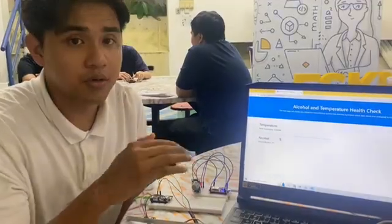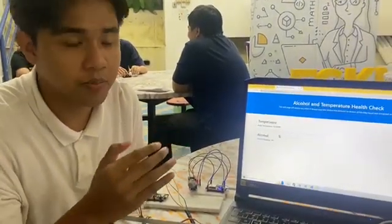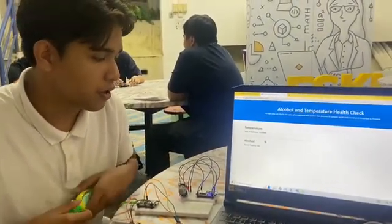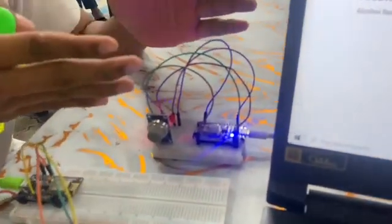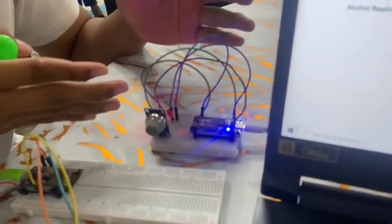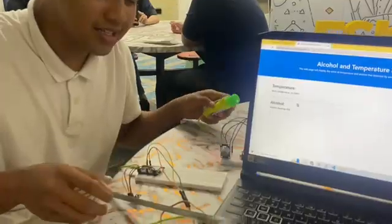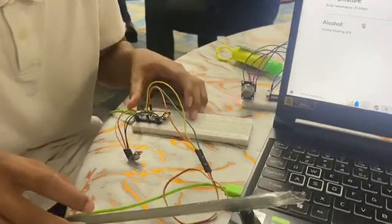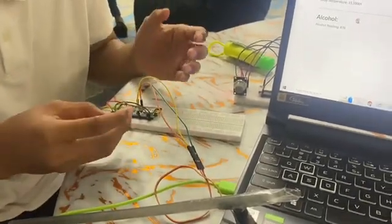This is our system: the alcohol and temperature health check. For the first system, it checks the alcohol level. This next part is the temperature check.